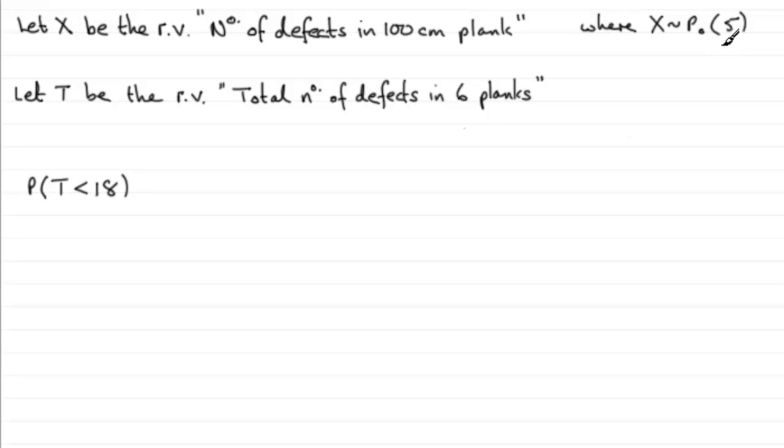If we're expecting five defects in every plank, over six planks that total is going to be 30 - six times the five. So what I'd have here is T distributed as a Poisson distribution with a mean of 30.